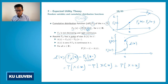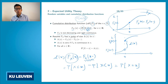For example, if you take a game where you throw a die, then you have jumps at 1, 2, 3, 4, 5, 6, because you have a strictly positive probability of taking the value 1, 2, 3, 4, 5, or 6.